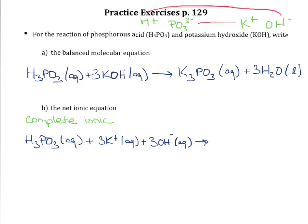On the product side, I've got that potassium phosphite. That again is an ionic compound, a strong electrolyte. So I'm going to write that as three individual aqueous potassium ions and the phosphite ion. And then I have the water molecule. The water is not an electrolyte. It's a molecular compound. So I just write in the three water.